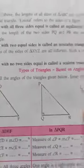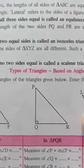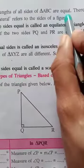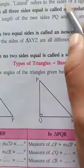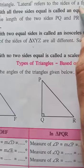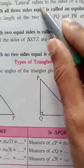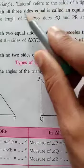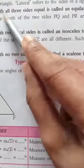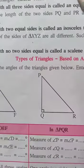In the table above, the length of all sides of triangle ABC are equal. Therefore this triangle is called an equilateral triangle. Lateral refers to the sides of a figure, so equilateral means equal sides. A triangle with all three sides equal is called an equilateral triangle.